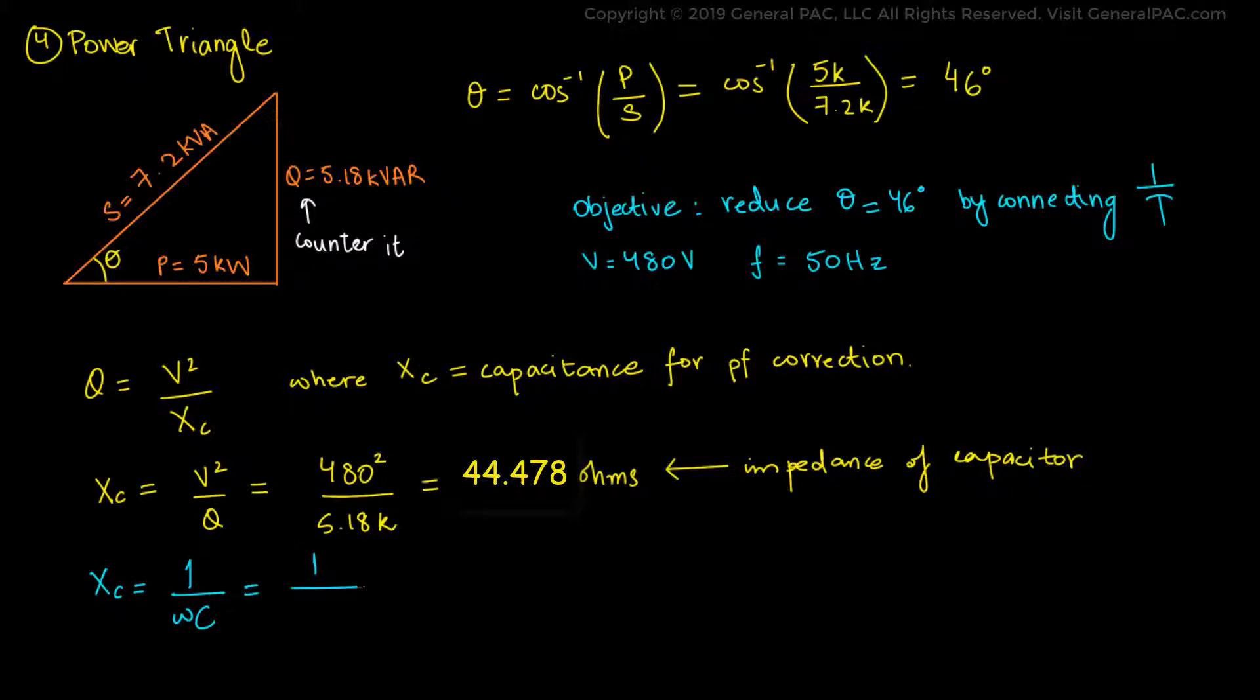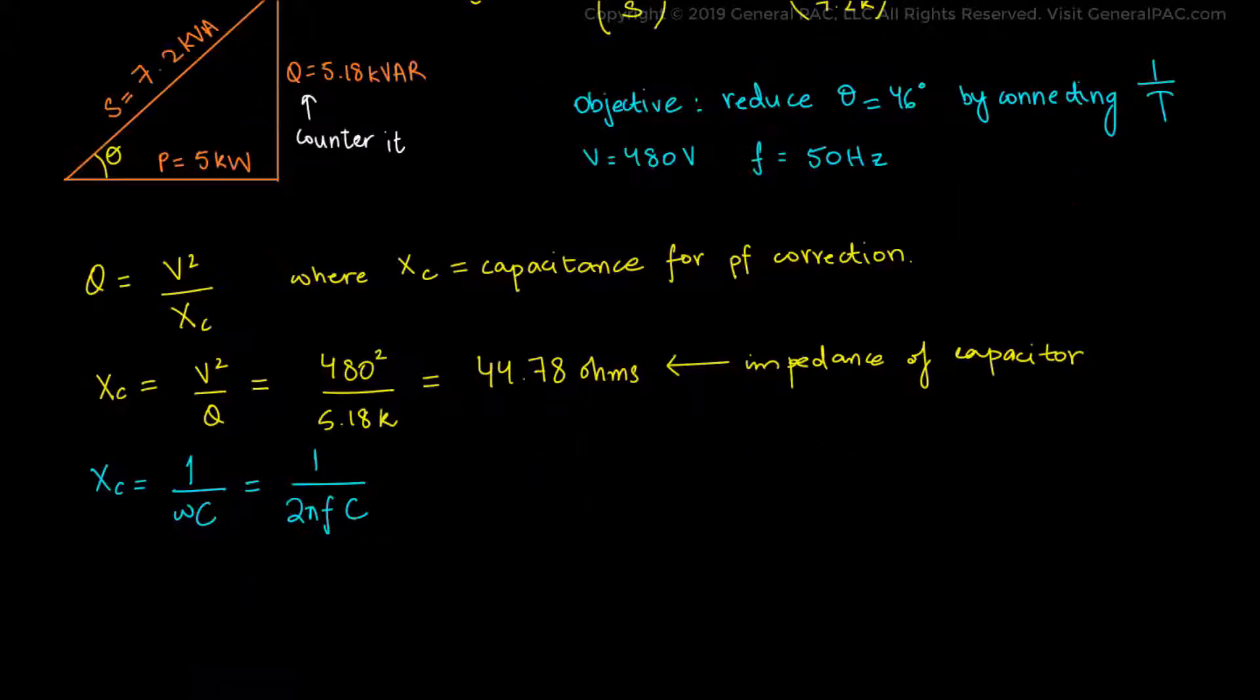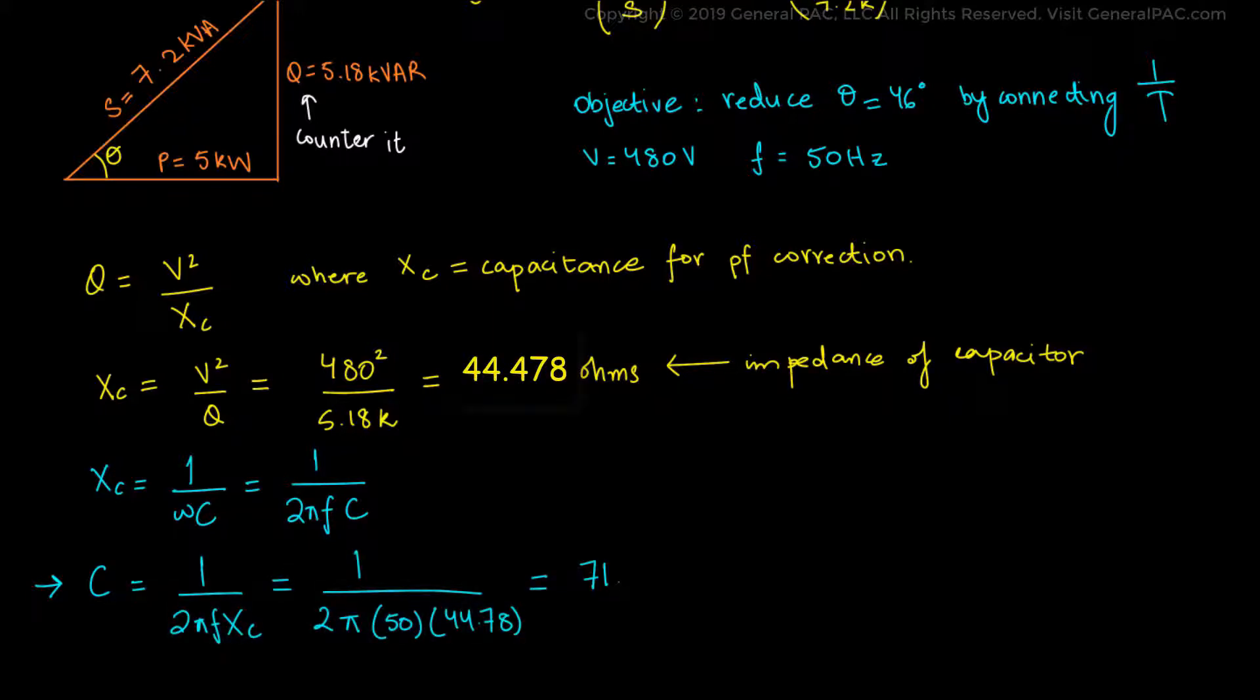Which equals 1 over 2π times frequency times capacitance. Plugging in the values of the capacitor reactance and the operating frequency, we get 71.56 microfarads.